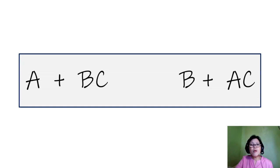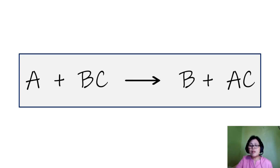The generalized way of writing a single replacement reaction: we start with A — the element initially by itself — plus BC, the paired elements. The result is B, the element that is booted out, plus AC, the elements that end up paired together. This is the single replacement reaction.